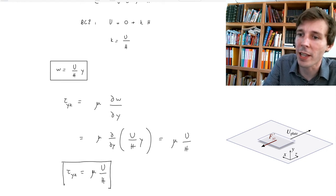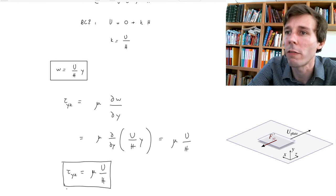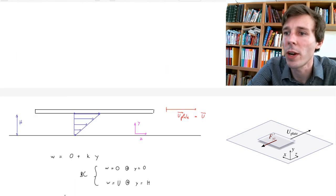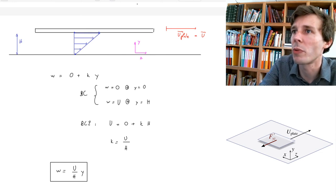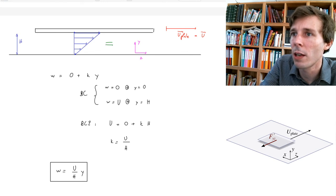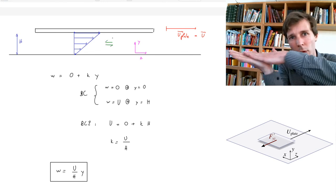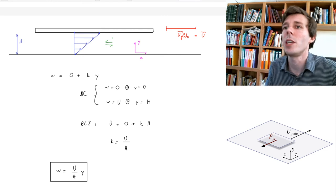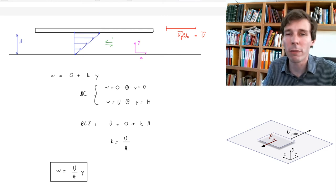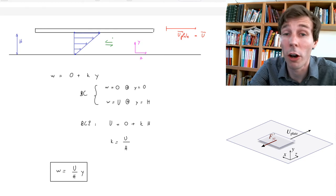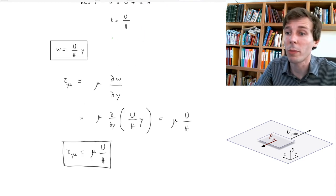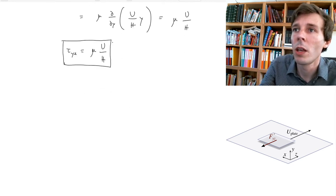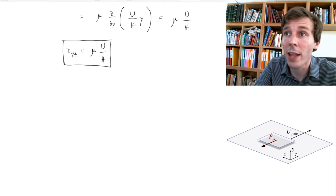This means that anywhere between those two plates, the shear — the rubbing effort between the two bodies — is everywhere the same constant value. Therefore, the shear on the plate also has the single value of μU/H.